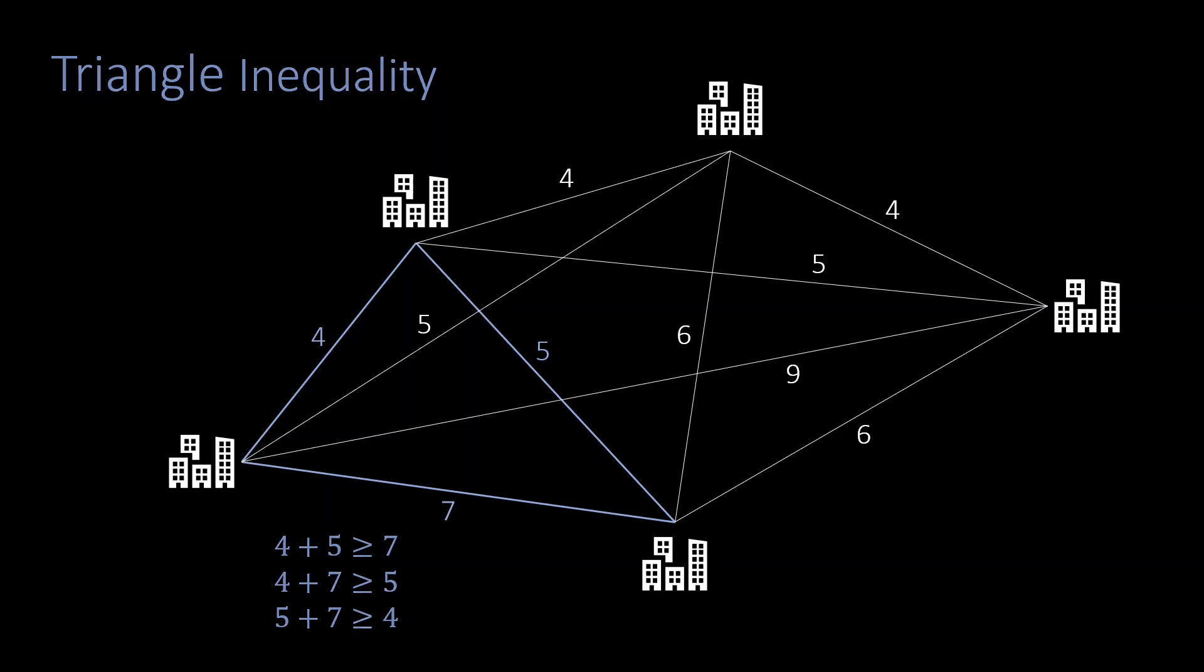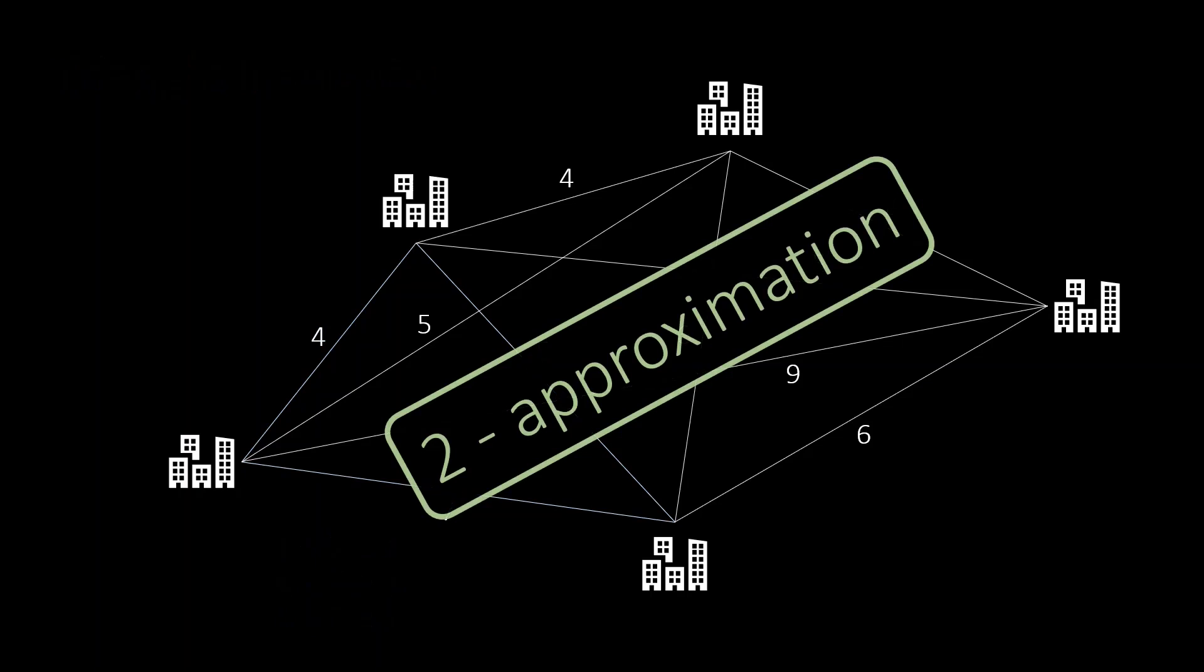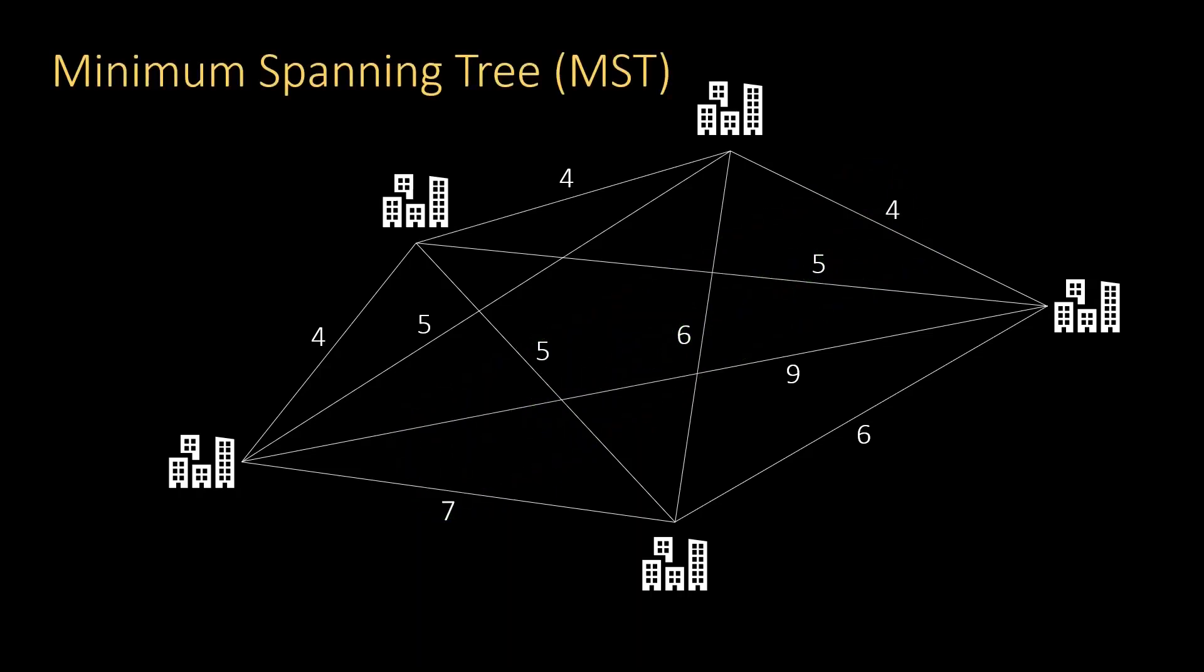For metric TSP, we can find a two approximation in polynomial time. That means we can find a tour that is no longer than twice the shortest tour. How can we do this? We begin with a minimum spanning tree of the graph. The minimum spanning tree is the shortest possible tree that connects all nodes of the graph. In our example, the MST has a length of 17. It is highlighted in yellow. Pause the video to check if this is really the shortest spanning tree.